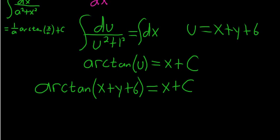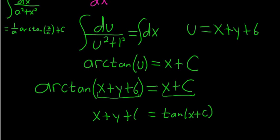People have a hard time with this. So the arctangent is a function. It takes this and sends it to x plus C. That's the result. So the tangent takes x plus C and sends it back to x plus y plus 6. They're inverse functions.